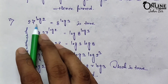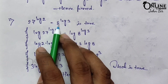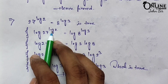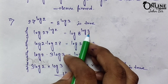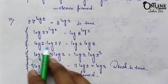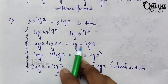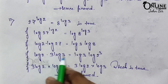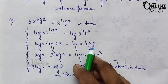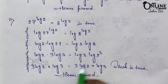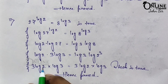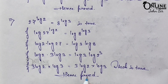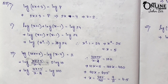The second one is similar: prove 27^(log2) = 8^(log3). Taking log on both sides gives log 2 into log 27 on the left, and log 3 into log 8 on the right. Since log 27 = 3 log 3 and log 8 = 3 log 2, both sides become 3 log 2 into log 3, which is true. Hence proved.